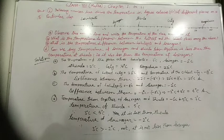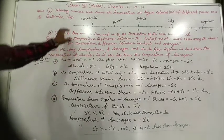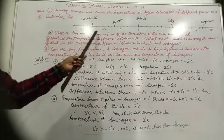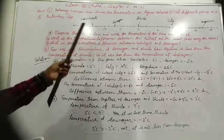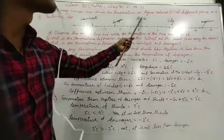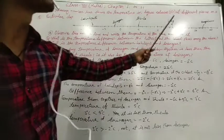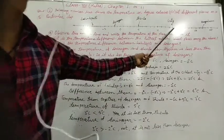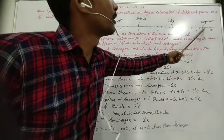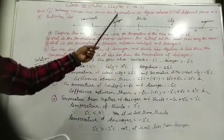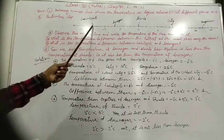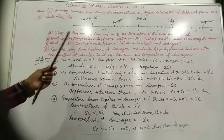Now we have to find the temperature of all cities. First, observe this number line. Temperature of Simla is 5 degrees centigrade. Temperature of Ooty is plus 14 degrees centigrade. Temperature of Bengaluru is 22 degrees centigrade. Temperature of Srinagar is minus 2 degrees centigrade. Temperature of Lahul-Spiti is minus 8 degrees centigrade.